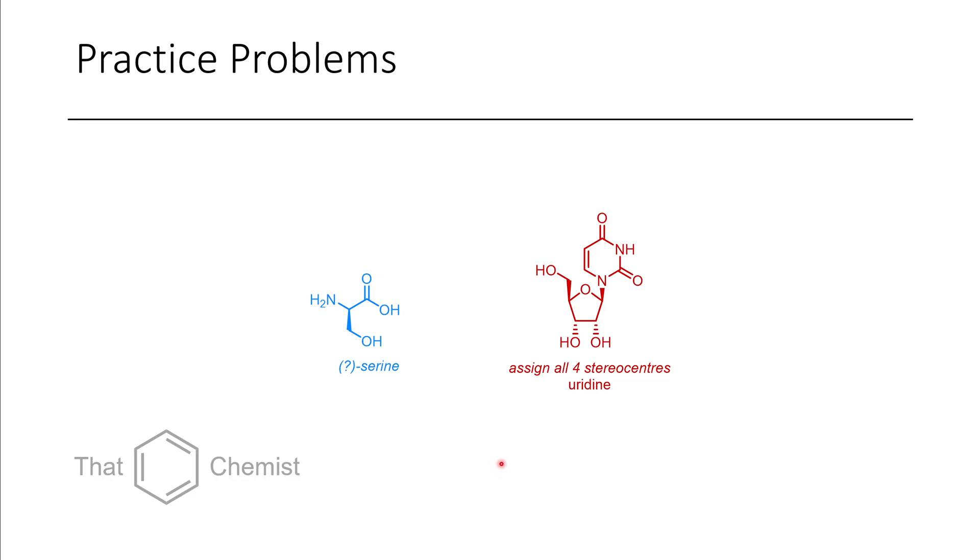For our next lecture, it would be good for you to do practice problems assigning stereocenters. Here's one of the enantiomers of serine, and here's uridine in its natural form. You want to go through and assign priority for each of these stereocenters. Hopefully this has been really helpful for you guys today. If you have any questions, I'd encourage you to leave them in the comments. If you have any criticisms or comments about how this lecture series could be done better, I'd be happy to hear it, and I hope you have a wonderful day.